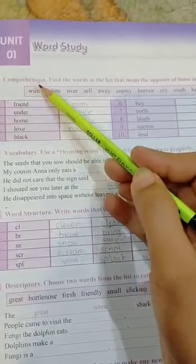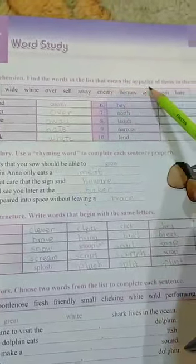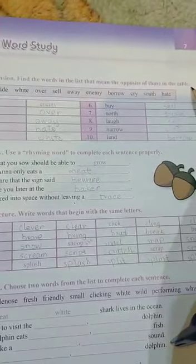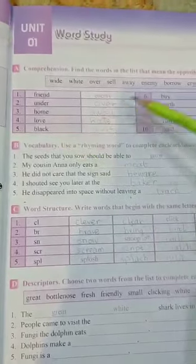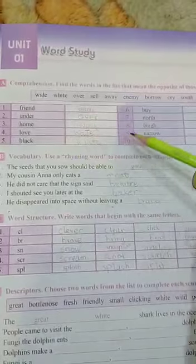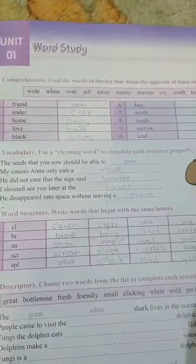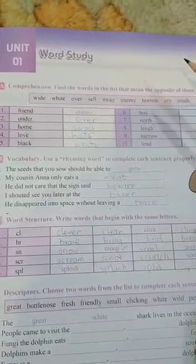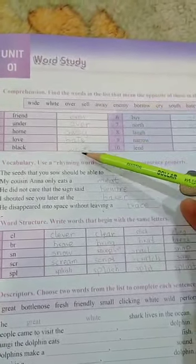The first question is comprehension. Find the words in the list that mean the opposite of those in the table. These are the words given to you in the table and you have to write the opposite of these words by searching them in this list. So first of all let me explain you the words so that it will be easy for you to pick up the words and put them in the correct place.